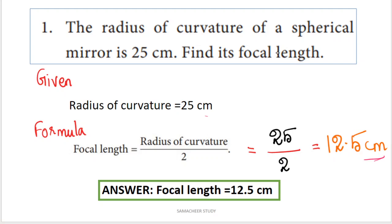We know that focal length and radius of curvature are connected by the formula: focal length equals radius of curvature divided by 2. So, substituting directly, 25 divided by 2 equals 12.5. The unit is cm, so the answer is focal length equals 12.5 cm.